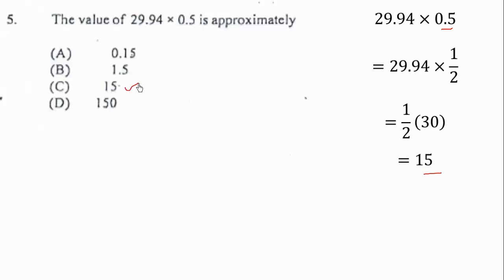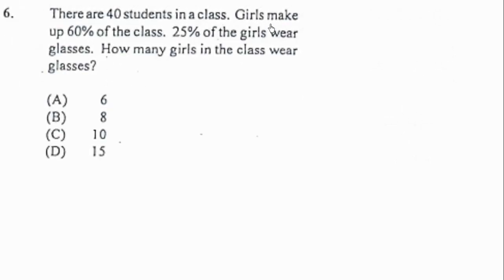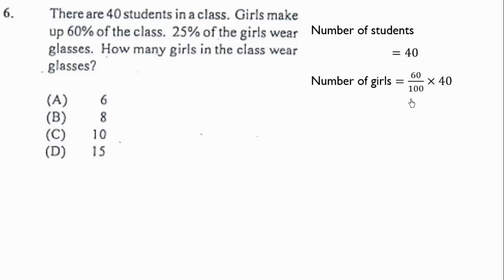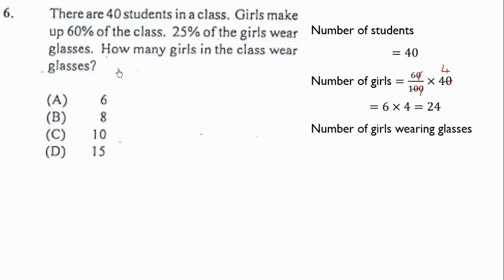Question 6: there are 60 students in a class. Girls make up 60% of the class, and 25% of the girls wear glasses. How many girls wear glasses? Number of girls is 60 over 100 times 60, which gives 36. Then 25% of 36 — that is 25 over 100 times 36, the same as 1 out of 4 times 36 — gives 6 girls wearing glasses.